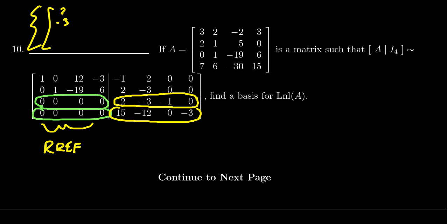two, negative three, negative one, and zero as the first vector. You can write as rows if you prefer, I'm writing as columns right now. You get negative 15, excuse me positive 15, negative 12, zero, negative three, and this will then give us a basis for the left null space.